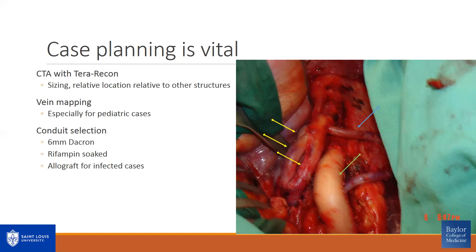Case planning is critical. For me, it's CTA and 3D reconstruction, which allows me to size the vessels and understand the relationships with surrounding anatomic structures. Vein mapping is also key, especially for pediatric cases where the greater saphenous vein may not be what you want and you may have to use other conduit. Other conduit options include 6mm Dacron, rifampin-soaked Dacron, or allograft — especially for infected cases. This is an example of a case I've done recently, showing a cryopreserved thoracic piece; I used a bifurcated aortoiliac piece — one limb going to the right renal artery, the other to the celiac, SMA, and left renal.